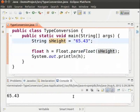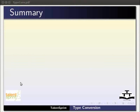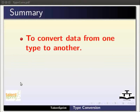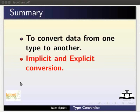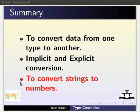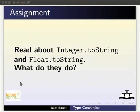This is how we do implicit and explicit conversion, and how we convert strings to numbers. This brings us to the end of the tutorial. In this tutorial we have learnt how to convert data from one type to another, what is meant by implicit and explicit conversion, and how to convert strings to numbers. As an assignment, read about the Integer.toString and Float.toString methods and find out what they do.